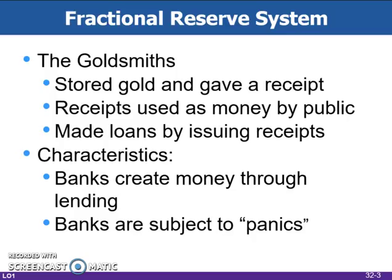The trader could give the receipt to another party, who could then go to the goldsmith and retrieve the gold. As the system developed, goldsmiths discovered that owners rarely actually came back for the gold, so some goldsmiths began issuing excess paper receipts as loans to merchants, producers, and really just about anyone whom they felt would pay back the loan. This was the beginning of what we now call the fractional reserve system.